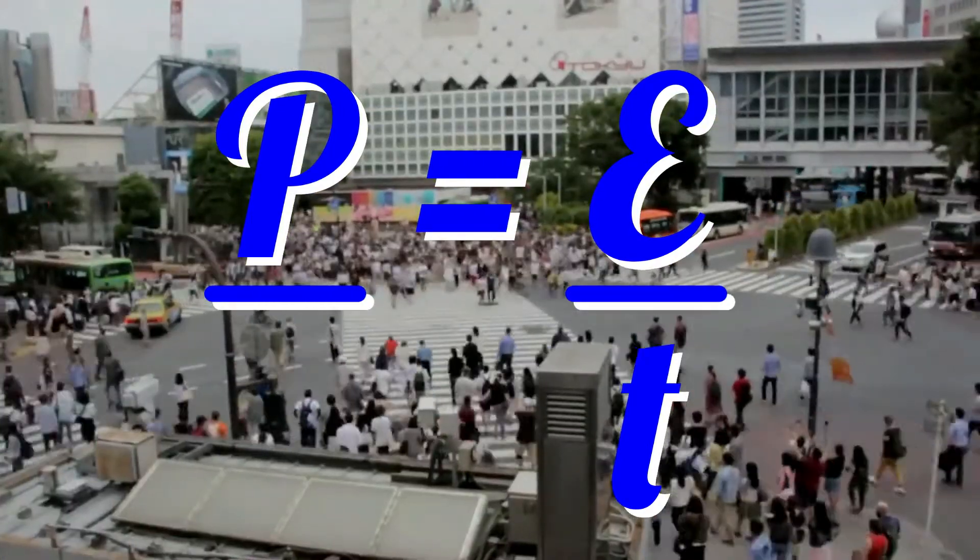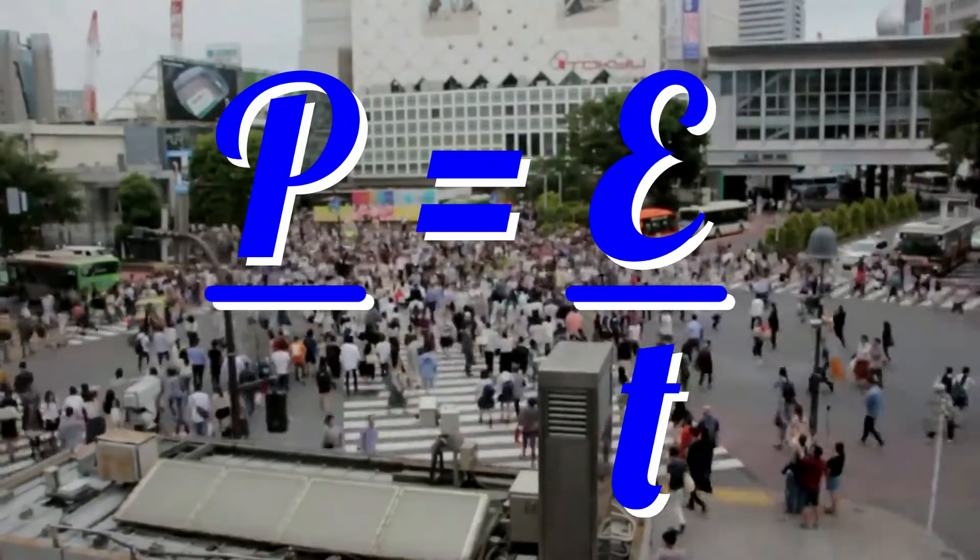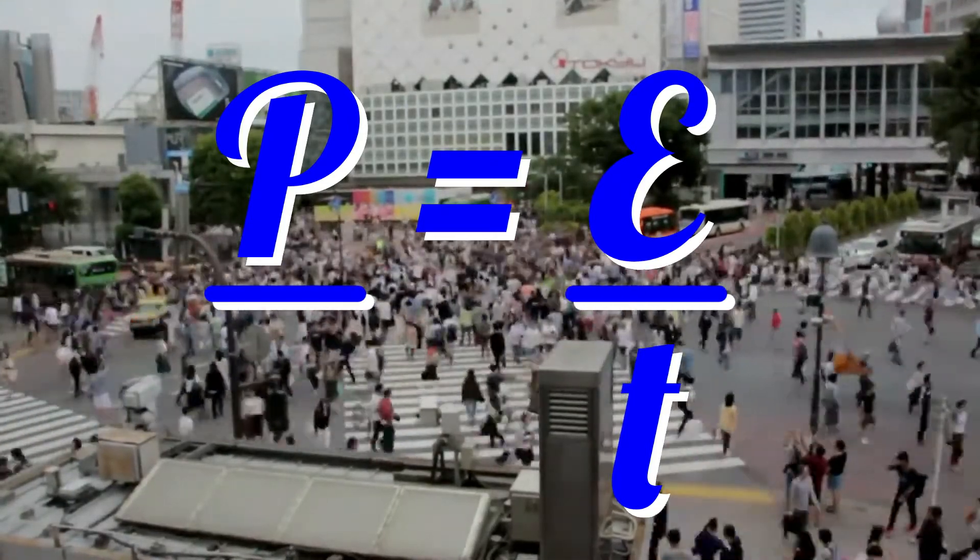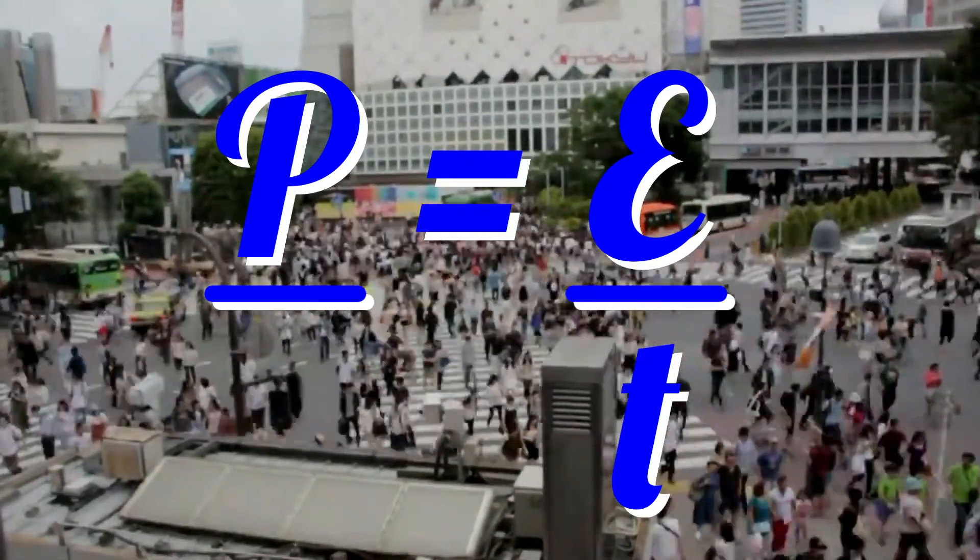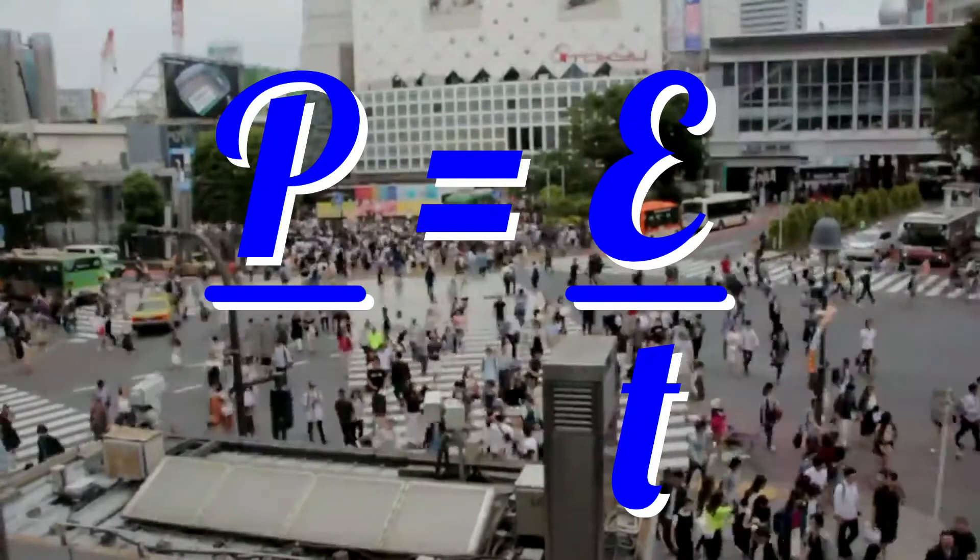If a device uses some energy in a period of time, the power of that device equals the energy used divided by the time it took to use that energy. P equals E over T.